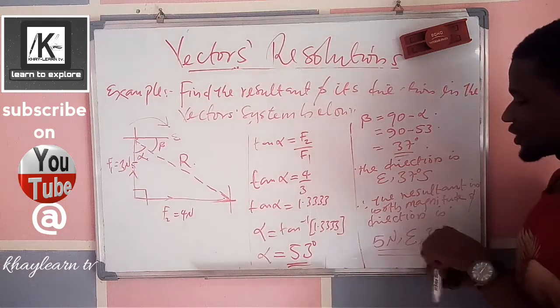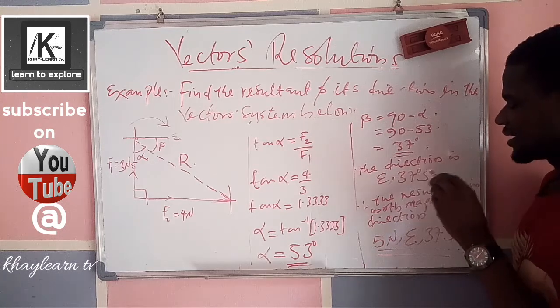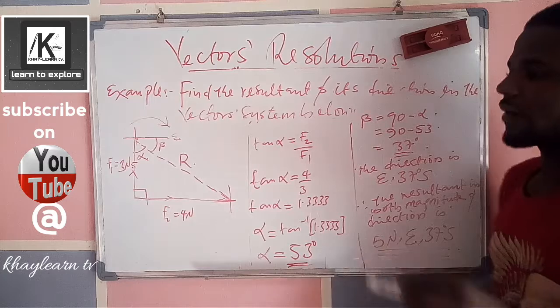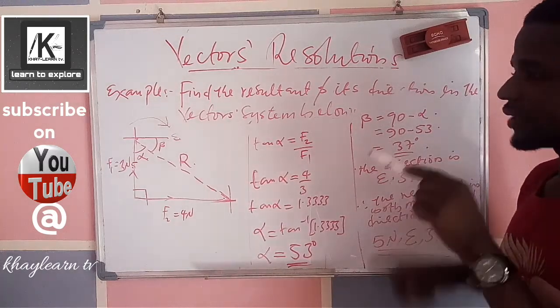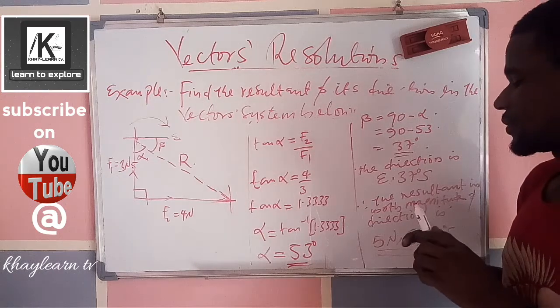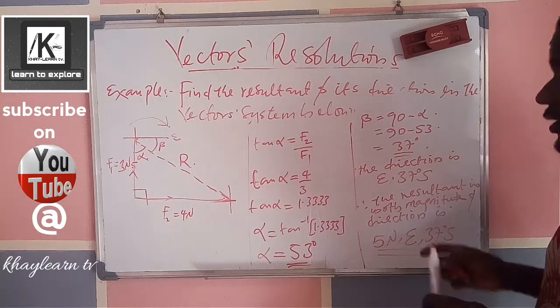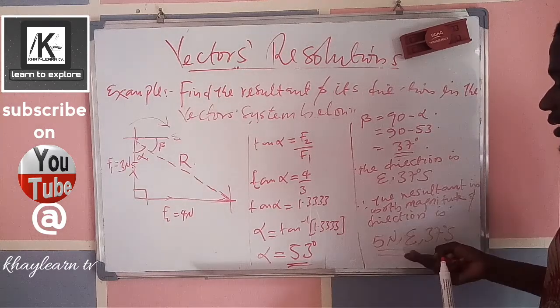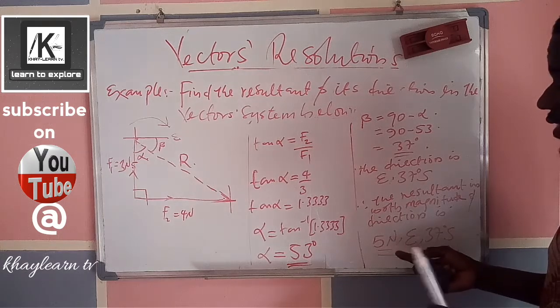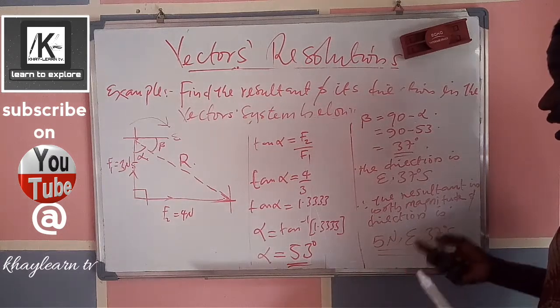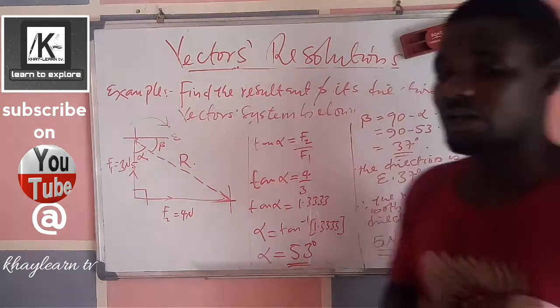So, we have our direction to be alpha, the angle which is 37 degrees south. So, meaning, our resultant lies on the angle 37 degrees between east and south. And the resultant and direction will be stated as here: 5 Newton is the magnitude of the resultant. The direction of the resultant is east, 37 degrees south. So, it is very simple and straightforward.